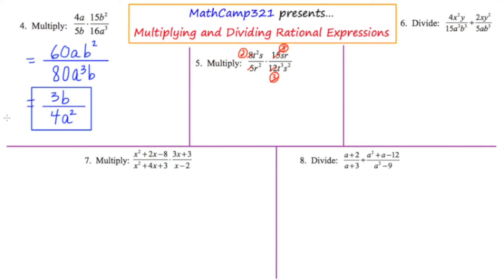Now I'm going to focus on the t squared on the top left and the t cubed on the bottom right. Those cancel, leaving me with a t on the bottom — write it in a little circle as a reminder. Then the s on the top left and the s squared on the bottom right cancel, leaving me with an s on the bottom right.